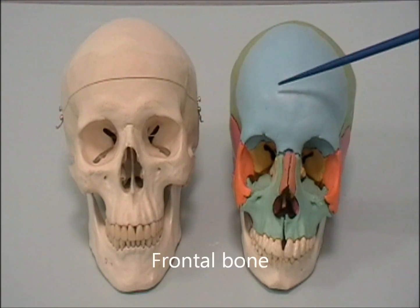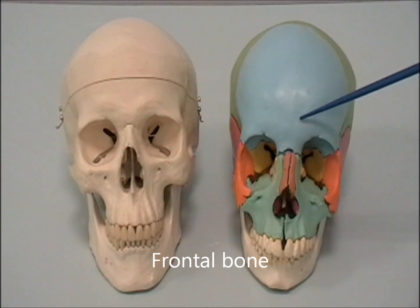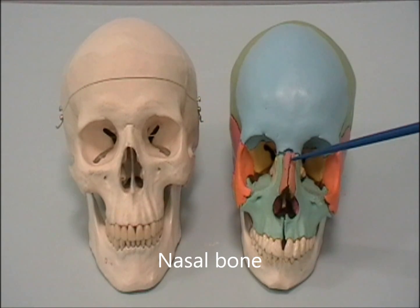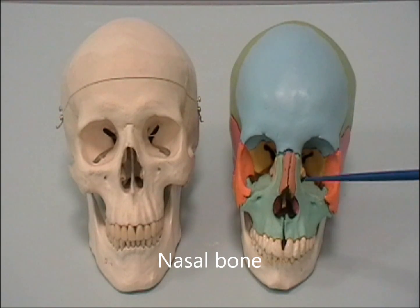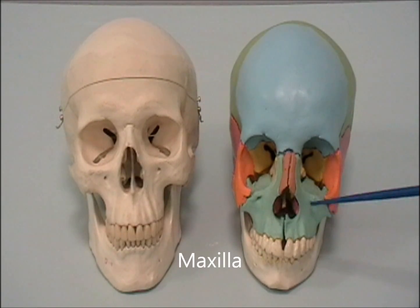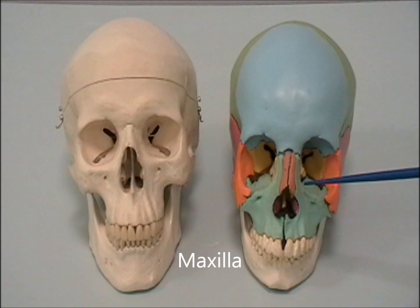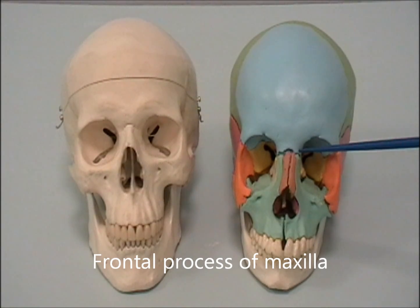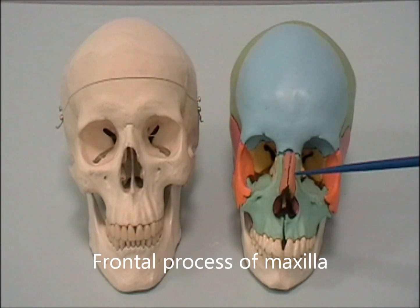We can see here the frontal bone participates in the formation of the bones of the face. Those are the nasal bones — two nasal bones — and this is the maxilla. The maxilla has a process, a frontal process, that articulates with the frontal bone and articulates with the nasal bone as well.